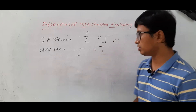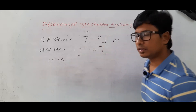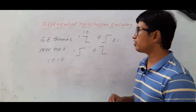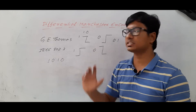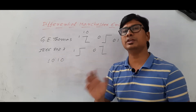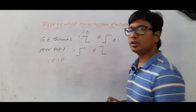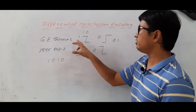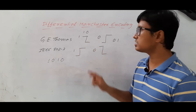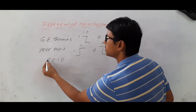Suppose if you have one-zero-one-zero, the first bit is one. If you are following J.E. Thomas, in J.E. Thomas, one will be represented like the Z-shape and zero will be represented accordingly. This bit representation applies for the first bit.